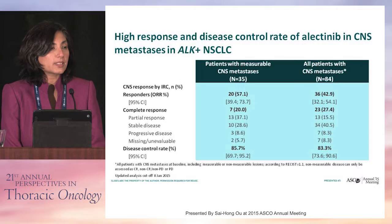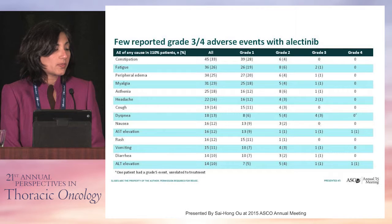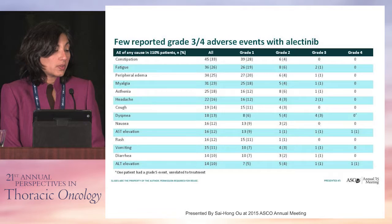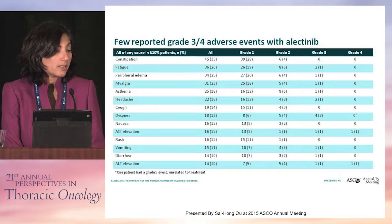Going back to CNS metastases, CNS activity was notable with response rates of 57% in patients with measurable CNS disease, even regardless of prior radiation. The toxicity profile of alectinib showed really not much appreciable grade 3 or 4 toxicities — much of it is grade 1 and 2. The percentage of GI toxicities was fairly low, like 7% for diarrhea. Transaminitis was also reported, again grade 1 at 9%.